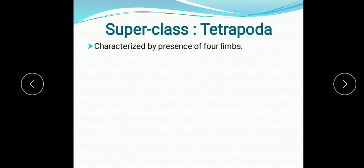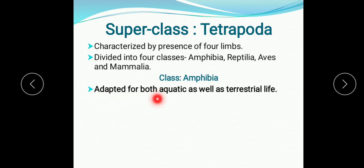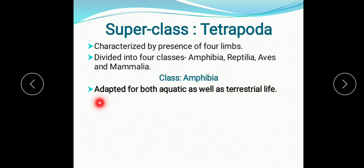Now the super class Tetrapoda. Tetrapoda is characterized by the presence of four limbs and is divided into four classes: Amphibia, Reptilia, Aves, and Mammalia. Class Amphibia is adapted for both aquatic and terrestrial life — some part of their life cycle is completed in water and the other part on land. 'Amphi' means both, so they are adapted to survive in both aquatic and terrestrial modes of life.